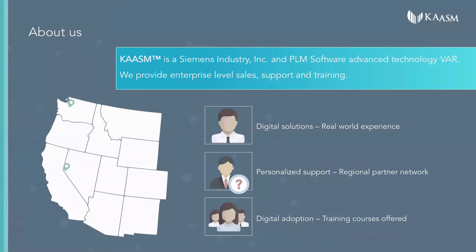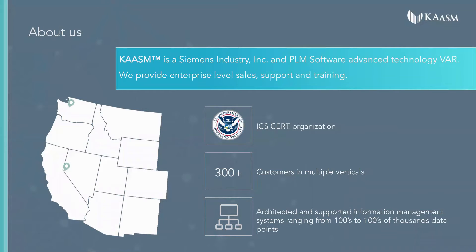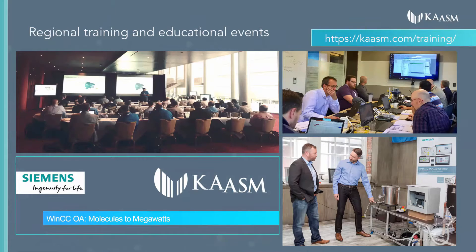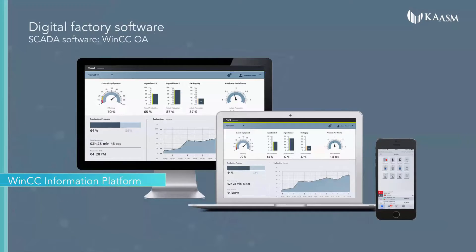I am joined by our VP of Technology Kirk Campbell, who will wrap things up with a brief demo, and we will do our best to answer any questions at the end. Chasm is aptly named for bridging technology gaps. We are a new breed of Siemens partner that provides sales, support, and training for the Siemens Digital Factory and PLM software business. We offer real-world experience for our digital solutions, personalized support and training to help our customers' digital adoption initiatives.